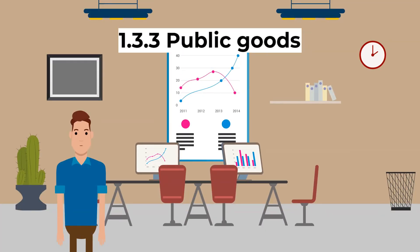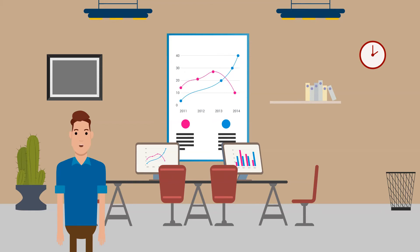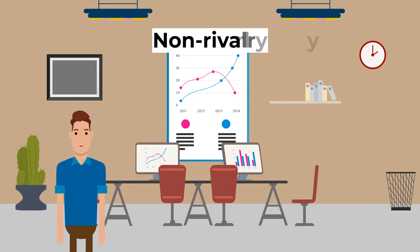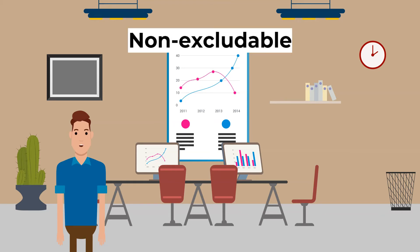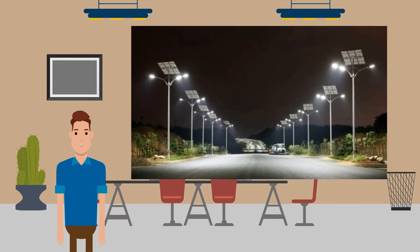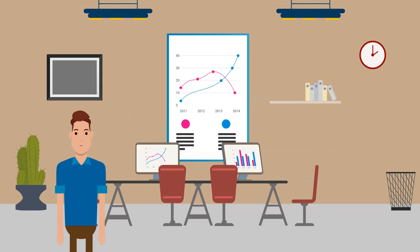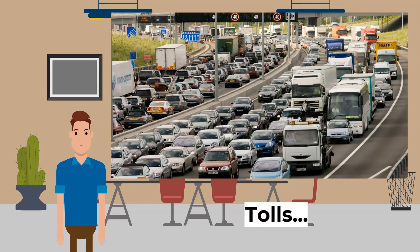Now let's look at public goods. Public goods are missing from the free market, but they offer many benefits to society. They have two key characteristics. Firstly, they are non-rivalry, which means that one person's use of the good doesn't stop someone else from using it. Secondly, they are non-excludable, meaning you cannot stop someone from accessing the good and someone cannot choose not to access the good. A good example is street lights, as you cannot prevent someone from using them, nor does their use prevent someone else from seeing the light. There are very few examples of pure public goods. Quasi-public goods are goods that aren't perfectly non-rivalry and non-excludable but aren't perfectly rival or excludable either — for example, roads, which are semi-excludable (there could be tolls) and semi-rivalry (congestion causes problems during rush hour). Private goods are rivalry and excludable, and most goods are private goods.